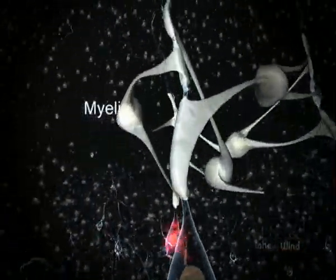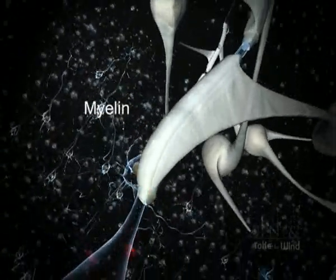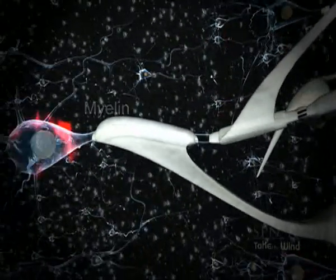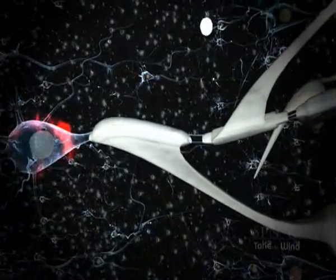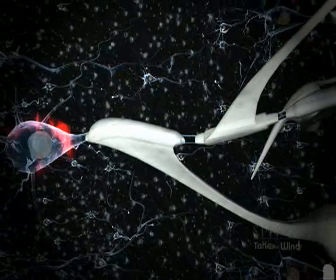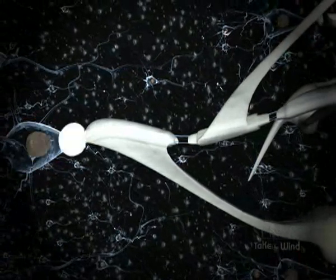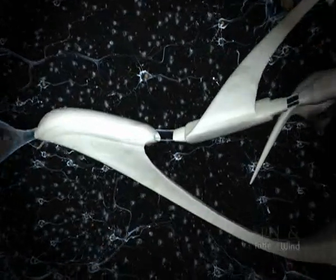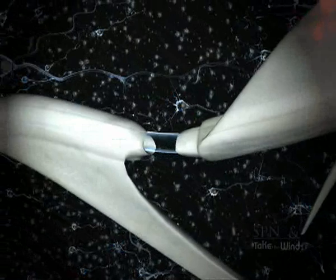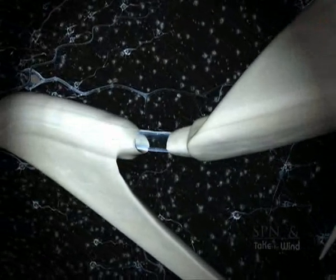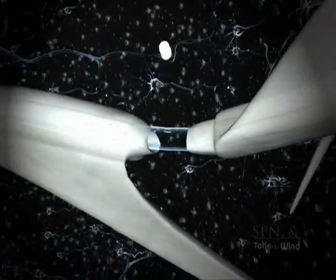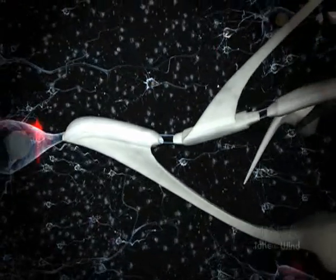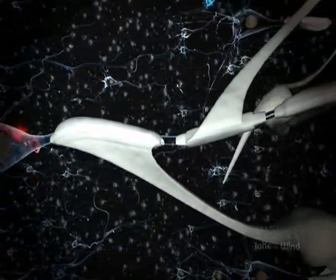The existence of a myelin insulation coating around some axons makes the action potential transmission faster. The myelin coating surrounding the axon is not continuous. The existence of several gaps exposes a high density of voltage-sensitive sodium channels to the extracellular side. This allows a quicker conduction of the nerve signal in a jumping manner throughout the non-myelinated region.